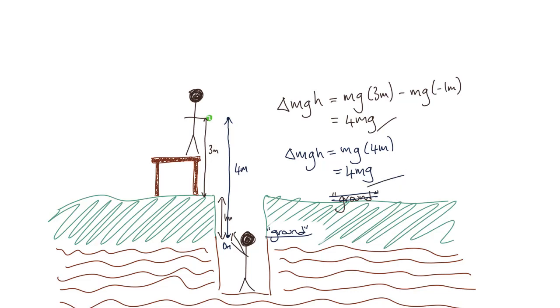So this seems pretty obvious, and it doesn't seem like we've actually simplified the maths, but this is just an example of how we can set our ground at different points to make our lives easier. So what are some ground rules for choosing reference points?